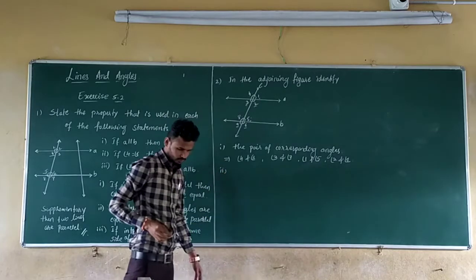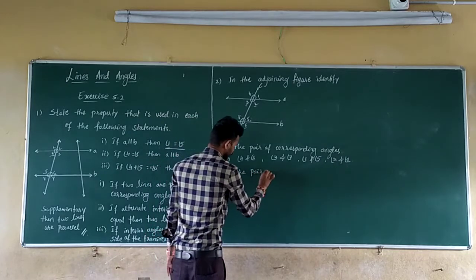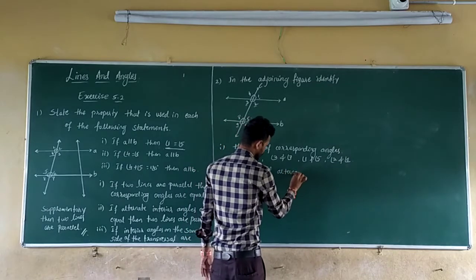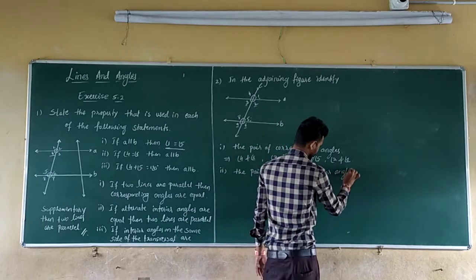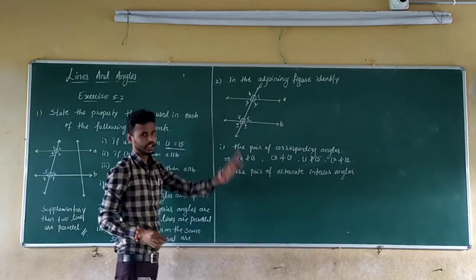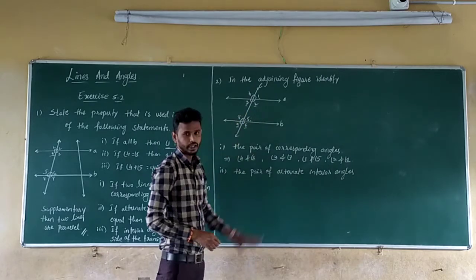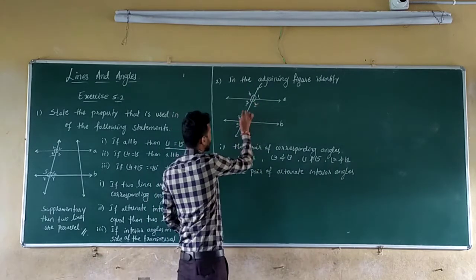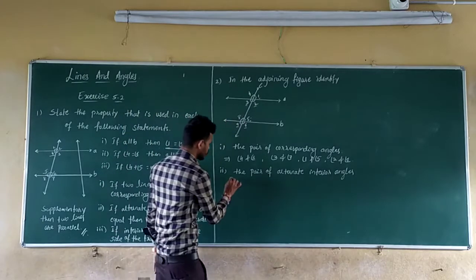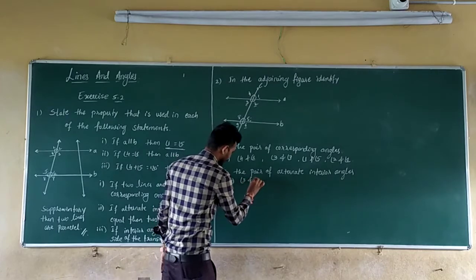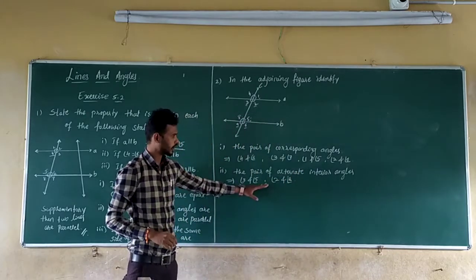Second part: identify the pairs of alternate interior angles. The interior angles are 2, 3, 5, and 8. Alternate means opposite sides, so the pairs are: angle 2 and angle 8, and angle 3 and angle 5. Those are the alternate interior angles — opposite interior angles across the transversal.